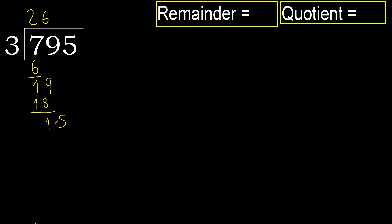Next: 15. 3 multiplied by 5 is 15, which is not greater. Subtract, remainder is 0. There is no next digit, so we finish.